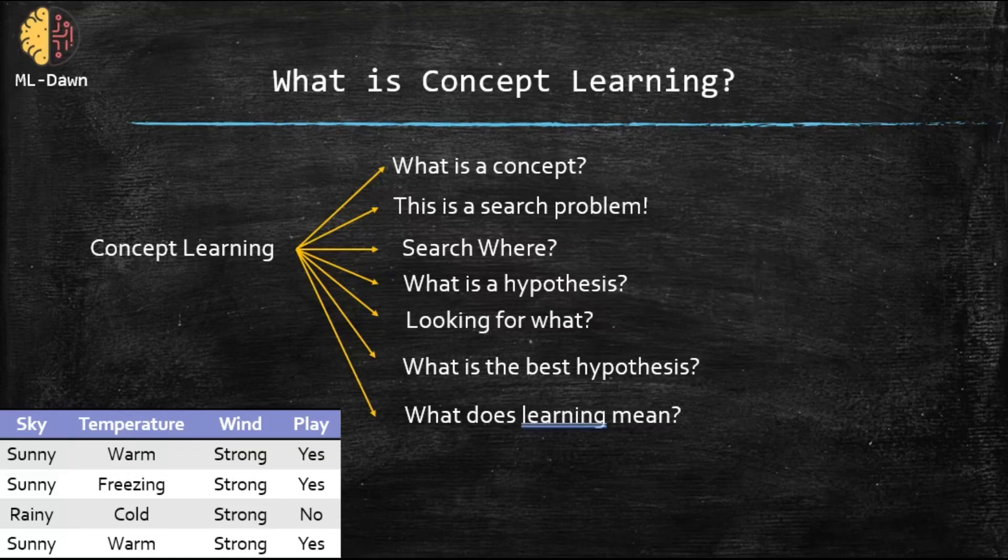And what is the best hypothesis? The best hypothesis is the one that fits the training set best. And what do I mean by that? It means that, for example, consider this case. Consider this case. Let me choose my pen over here. Good. Now consider this case. This is a hypothesis. For example, snowy, cold, strong. This is one of many possible hypotheses. Now let's say this is the best one that the machine has found.